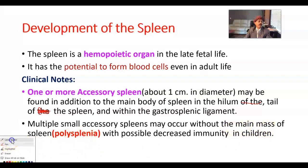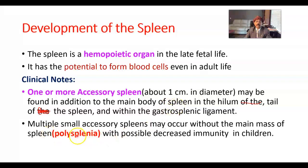In polysplenia, the main mass of the spleen is missing. Multiple small accessory spleens may be found without the main mass of the spleen. This is called polysplenia, and it is associated with possible decreased immunity or disturbed immunity in children.